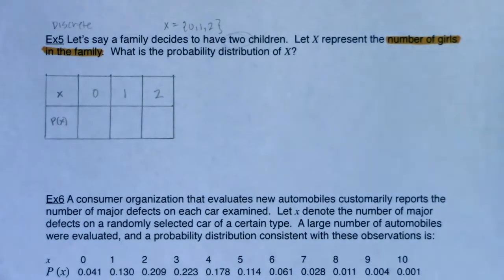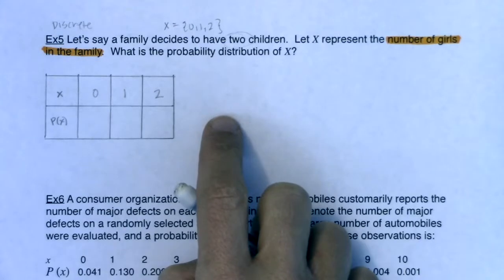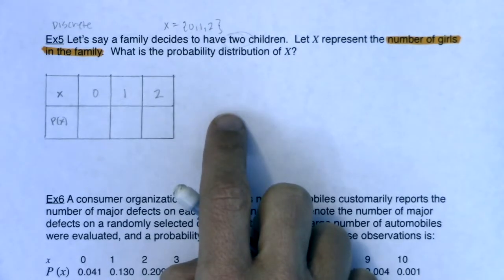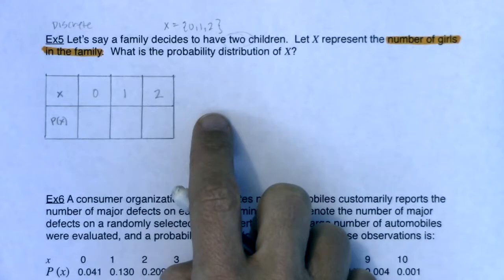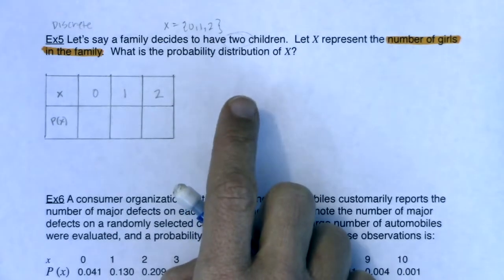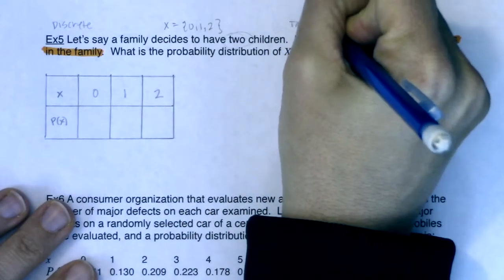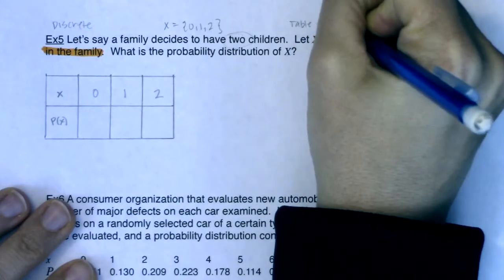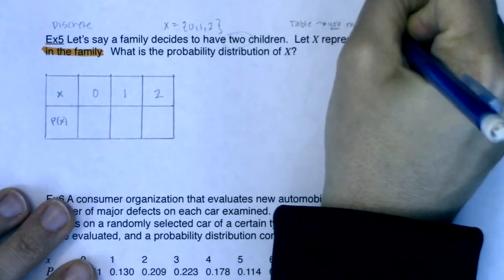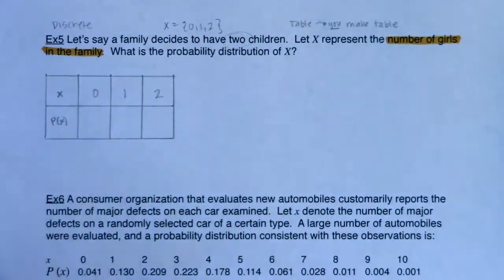Now, how do we get those probabilities? This question is different from examples 2 and 3. In example 2, with the moms being woken up after midnight, I gave you frequency counts and we converted those to relative frequencies. In example 3, with Nancy going to class, I gave you relative frequencies — a bunch of probabilities. I gave you none of those here. So this is the kind of table problem where you have to make the table yourself, with no frequencies and no relative frequencies given.